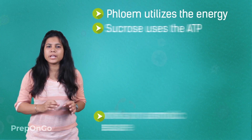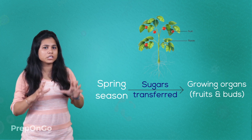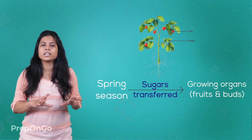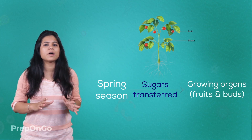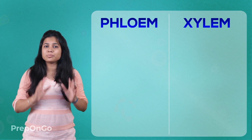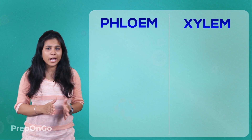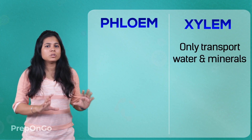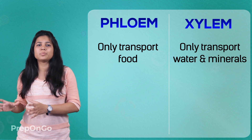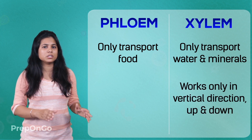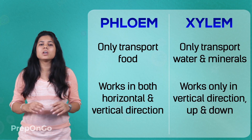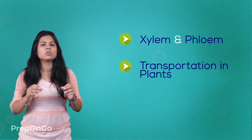For example, in spring, the sugars stored in the roots and stems are transported to growing organs such as buds, flowers, and fruits so that they can grow properly. To summarize the difference: xylem transports only water, whereas phloem transports food. Xylem works only in the vertical direction, but phloem works in both horizontal and vertical directions. In our next video, we will see the process of excretion. Thank you.